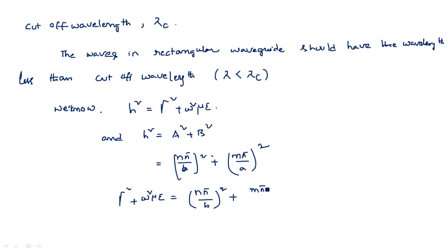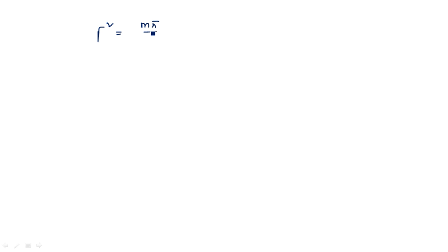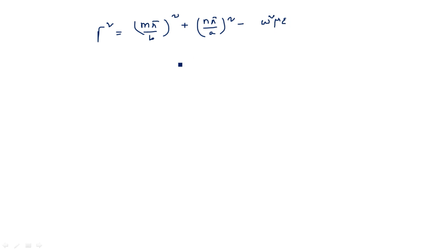Keeping gamma on one side: γ² = (mπ/a)² + (nπ/b)² minus ω²με.